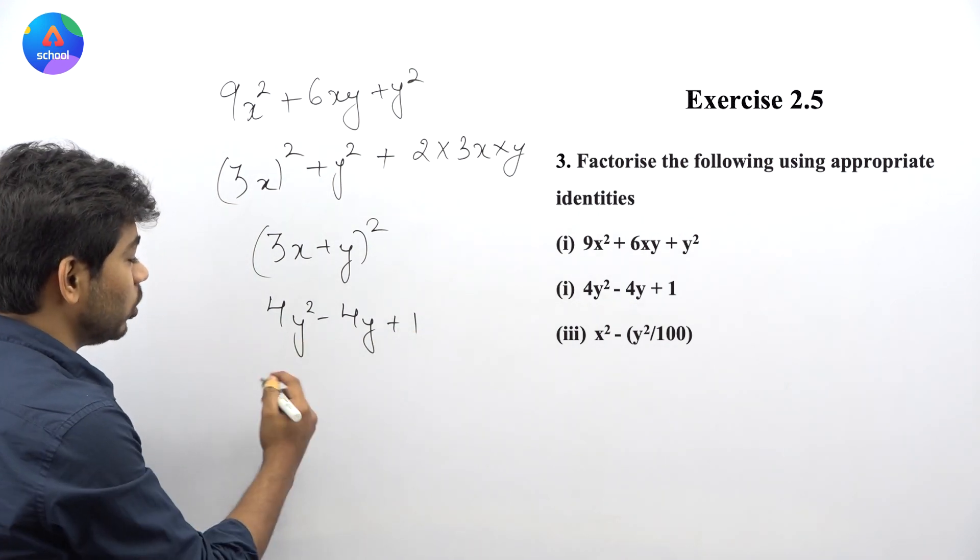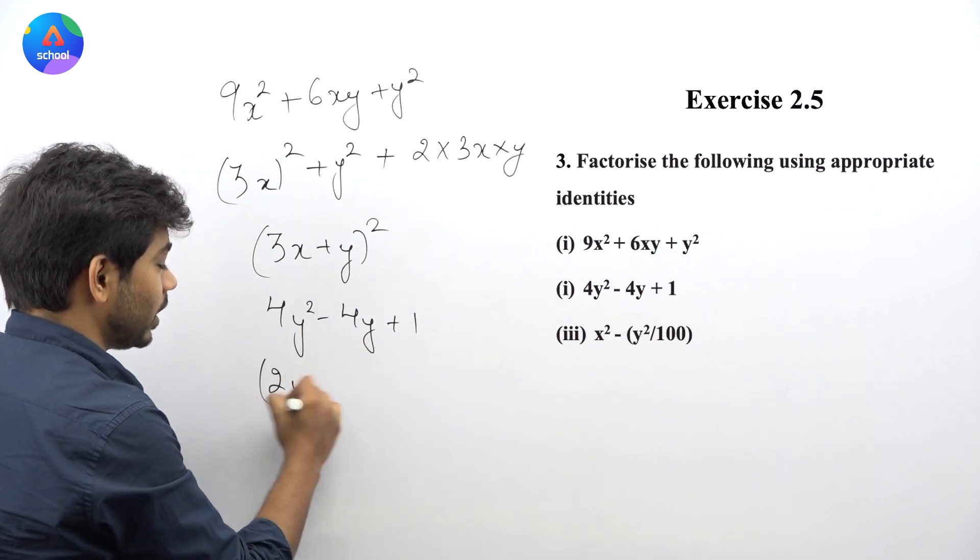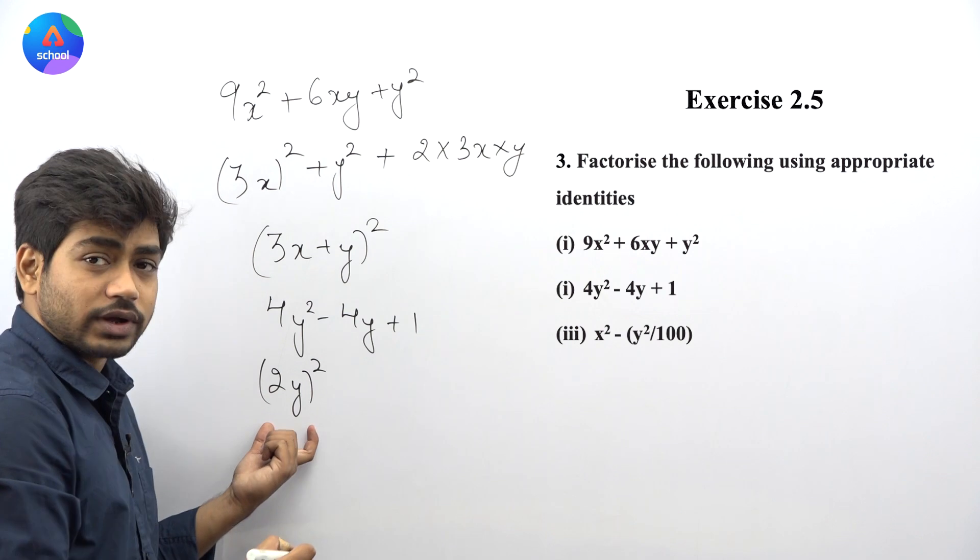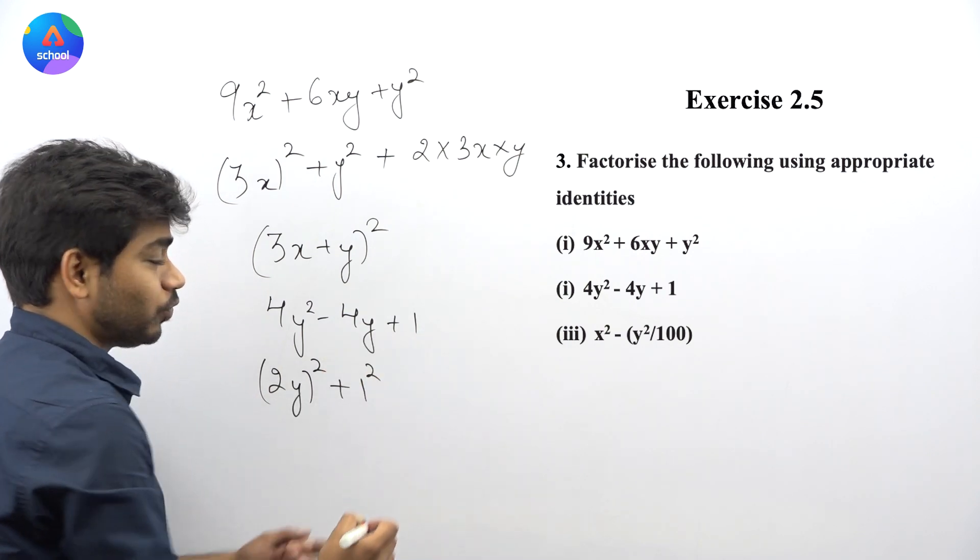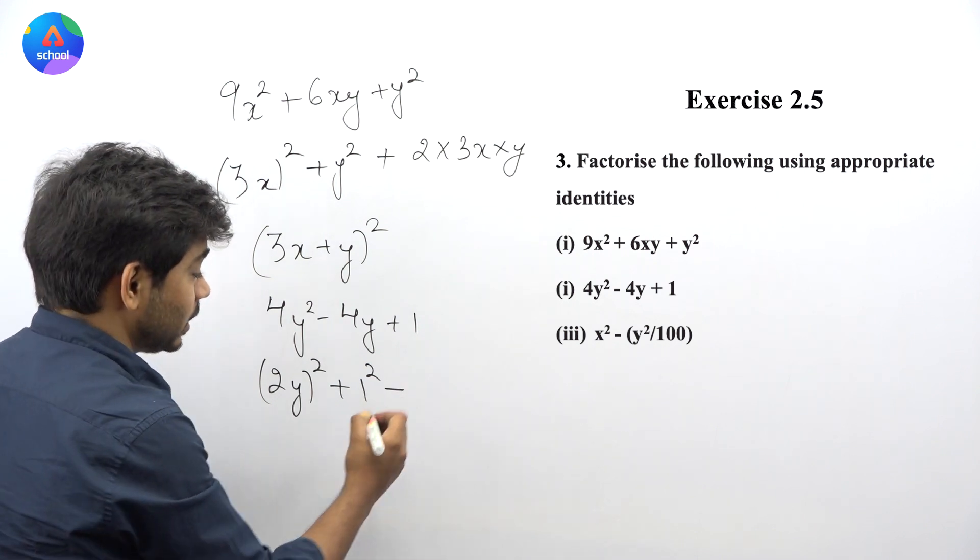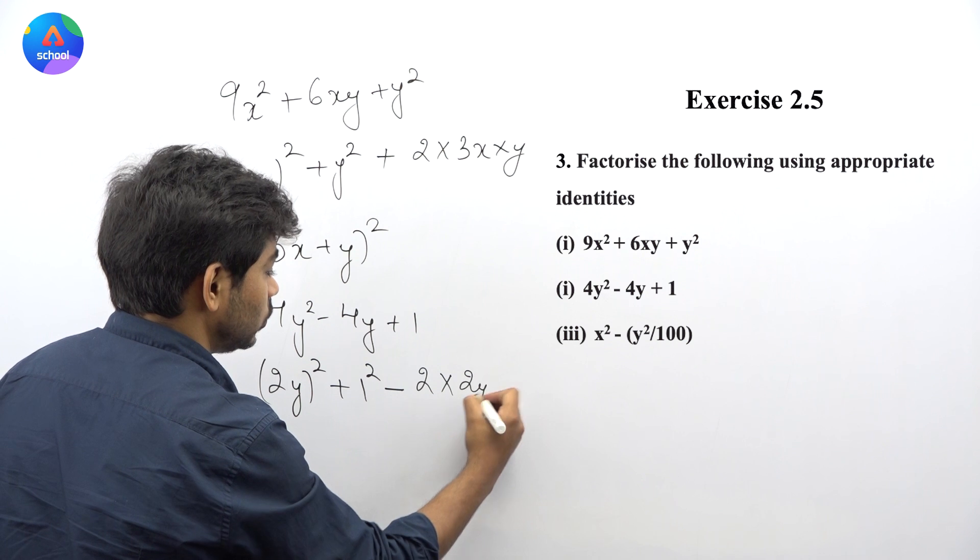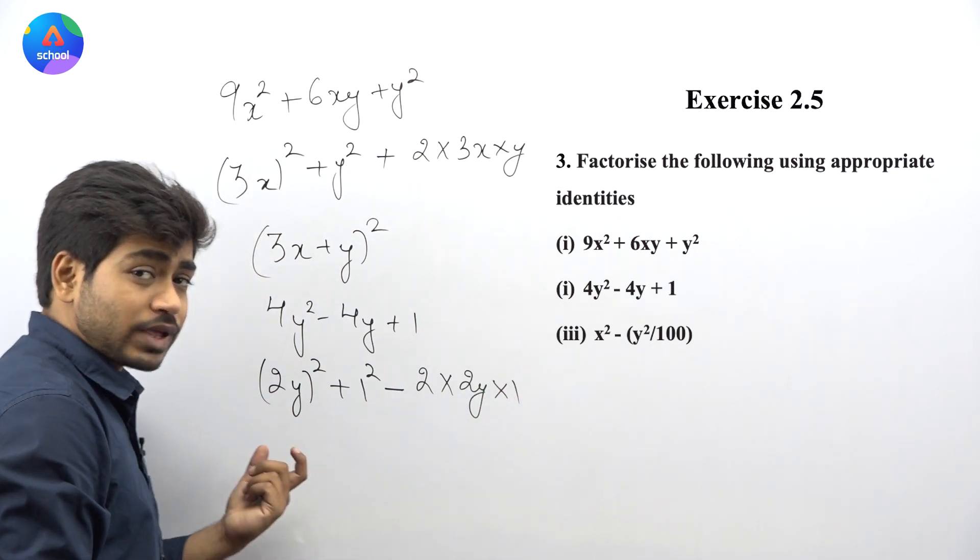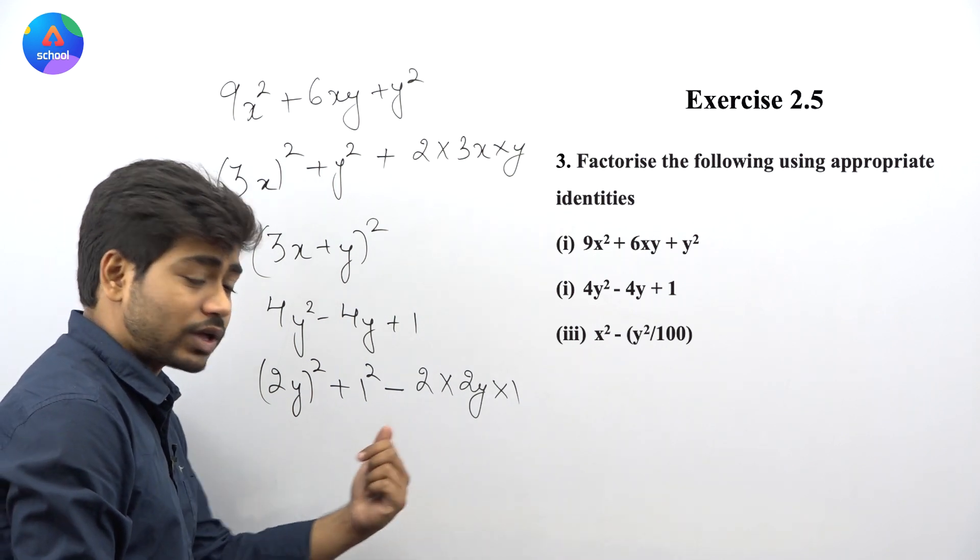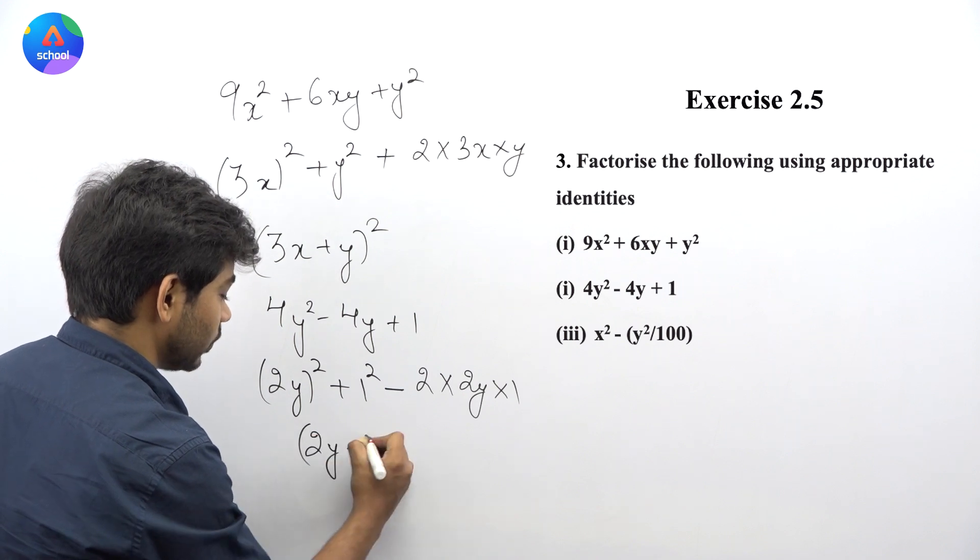For part (ii), we have 4y² - 4y + 1. This can be written as (2y)² + 1² - 2 times 2y times 1. Using the identity a² + b² - 2ab equals (a - b)², this becomes (2y - 1)².